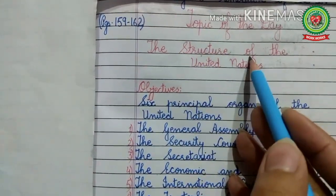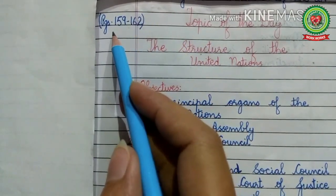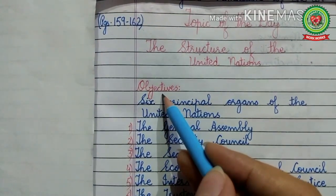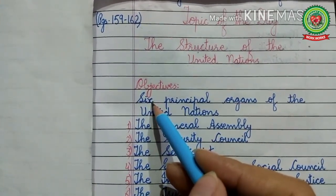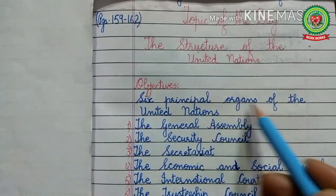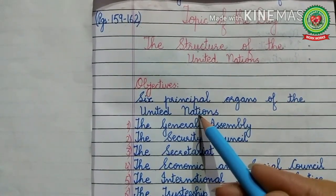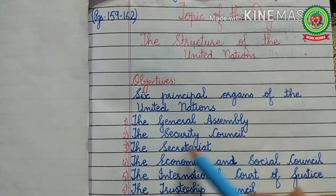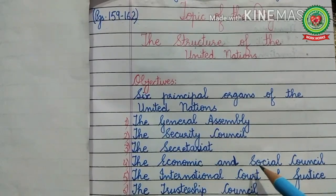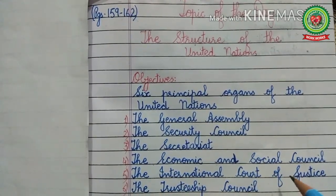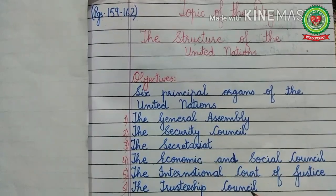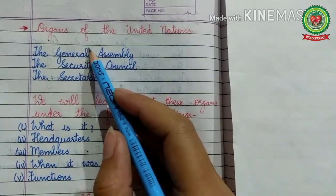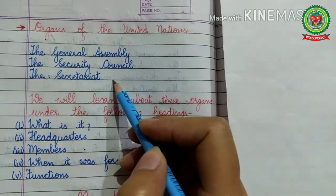The topic of today is the structure of the United Nations — we are going to discuss pages 159 to 162. The objectives of today's topic are: you will come to know about the six principal or main organs of the United Nations. These six organs are the General Assembly, the Security Council, the Secretariat, the Economic and Social Council, the International Court of Justice, and the Trusteeship Council.